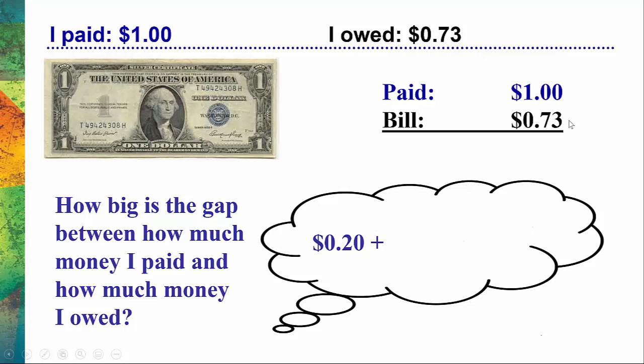But now I need to ask myself, how big is the difference between 73 cents and 80 cents? That's another 7 cents that I need to account for. So in my mind, I now add up 20 cents and 7 cents and realize that the correct change that I'm owed is 27 cents. And of course, you can verify that with a calculator.